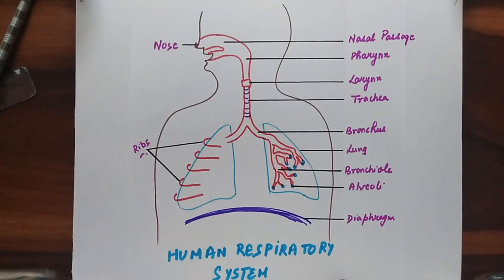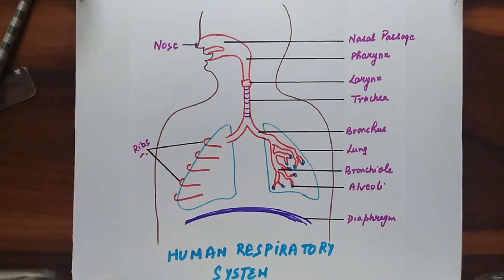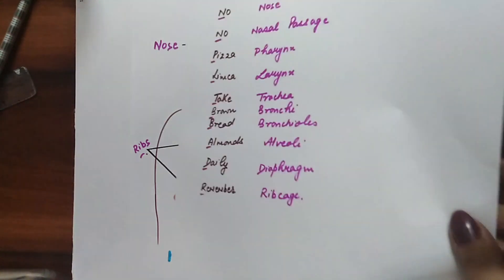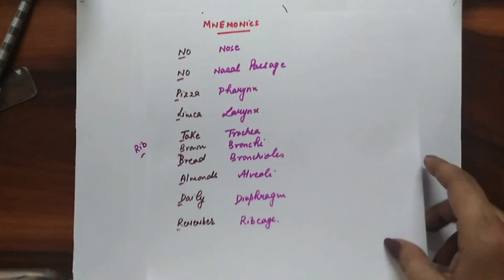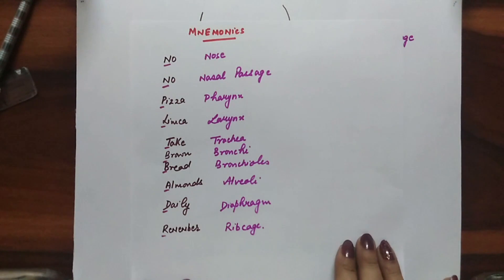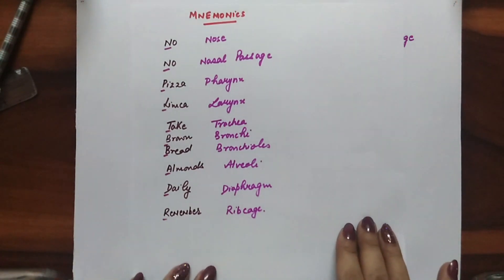So here the diagram of the human respiratory system is ready with all the labellings, and here is a simple way to remember the correct sequence of all the organs with the help of mnemonics.